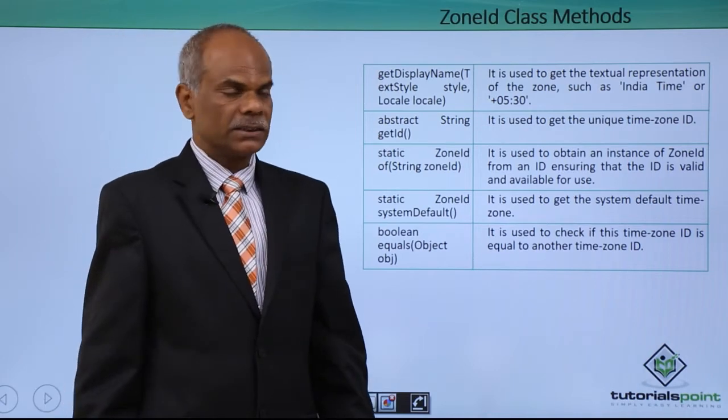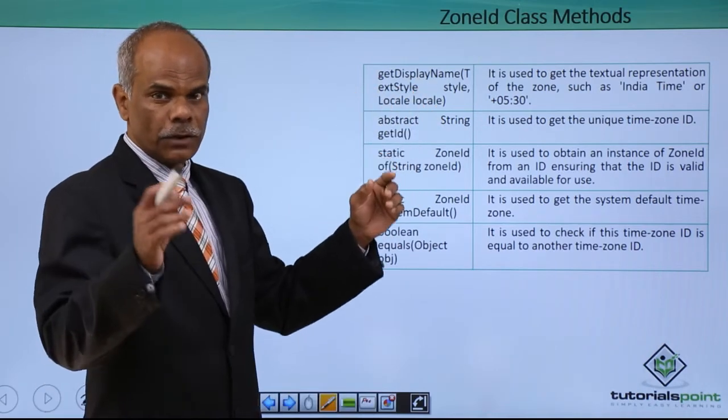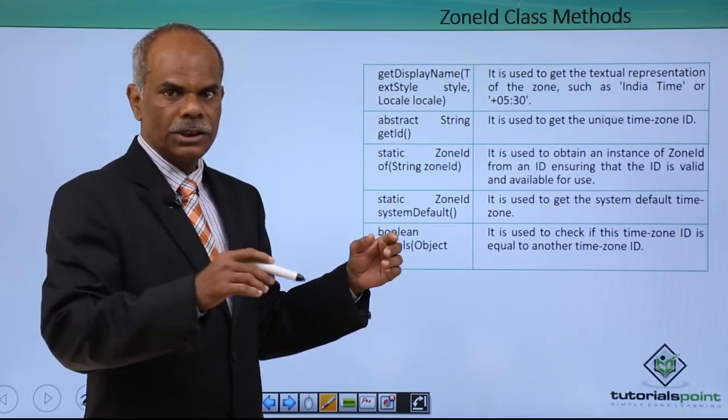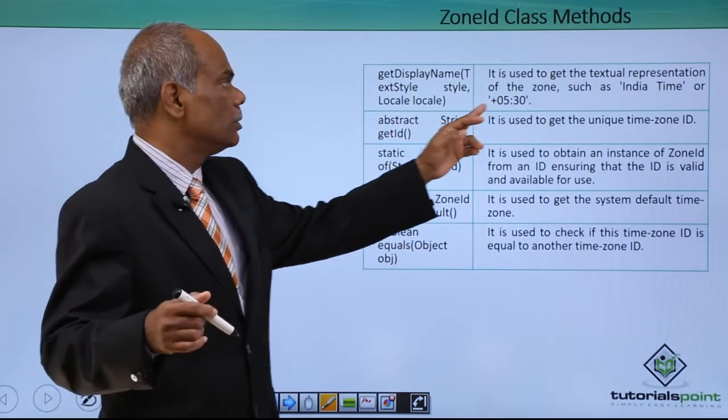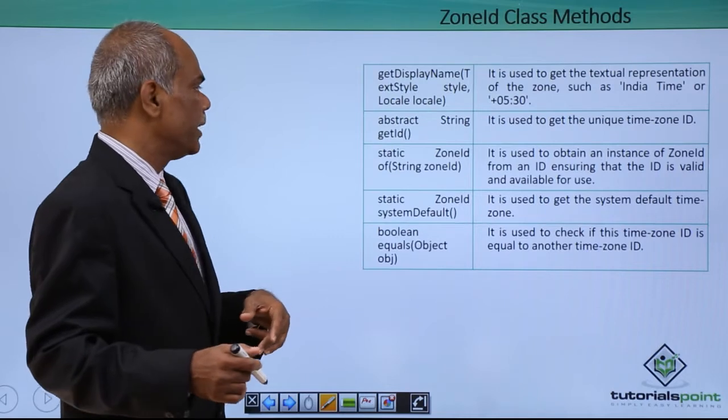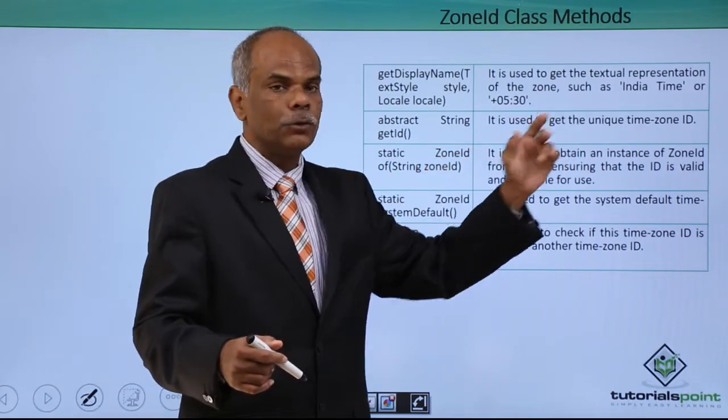ZoneID class methods. Display name, for example IST is corresponding to Asia oblique Calcutta. That textual representation will be written by the get display name. Get ID will return the unique time zone ID.